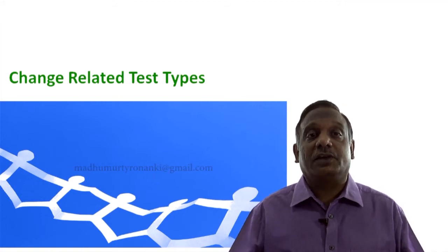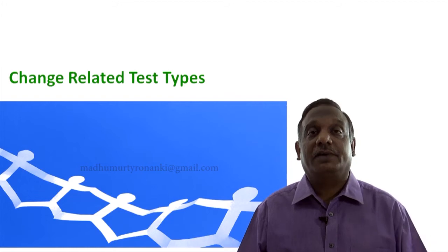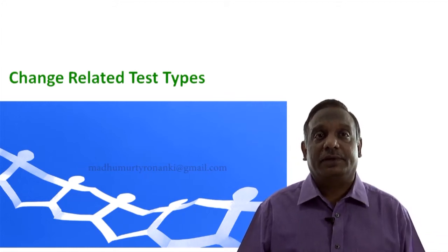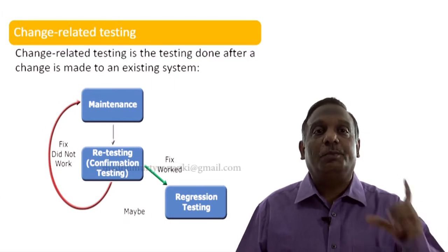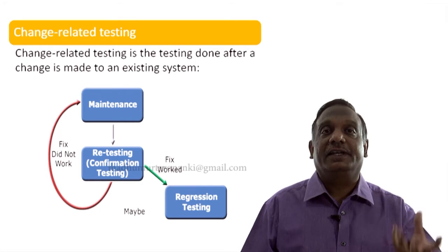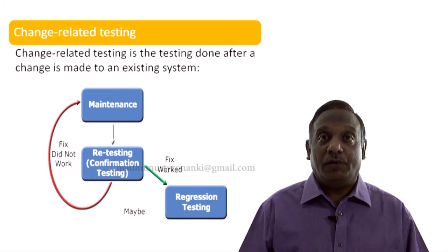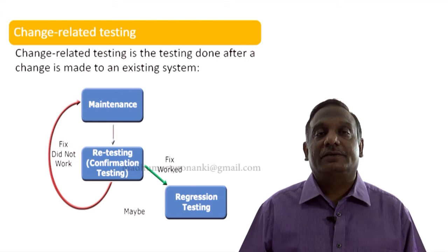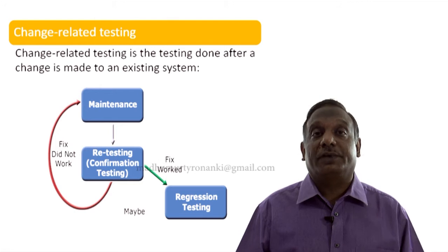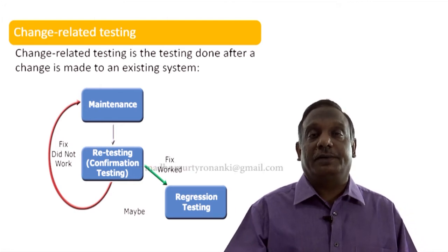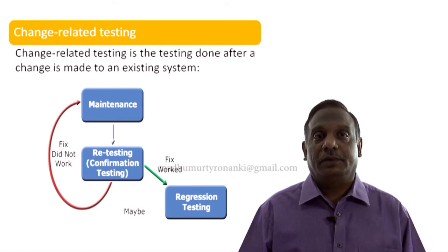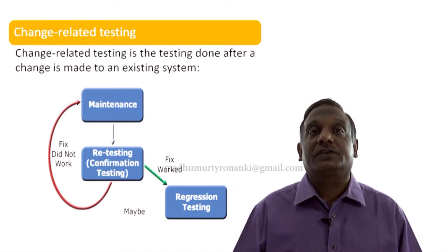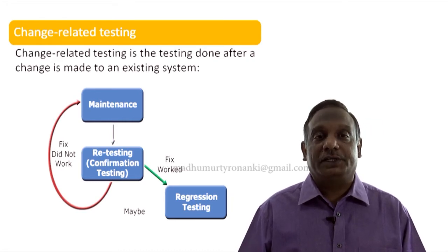Whenever we are changing software, another word for changing software is maintaining software. Change related testing is done after a change is made to an existing system or software. Whenever you are maintaining the software, meaning you are changing the software, the first thing you have to do after changing is confirm that whatever change you have done is working perfectly. That type of testing is called retesting or confirmation testing.